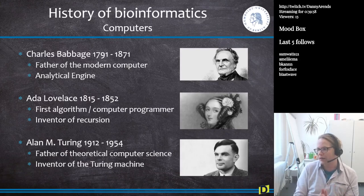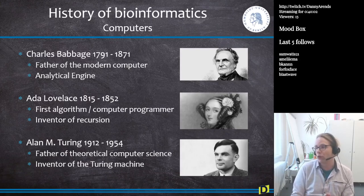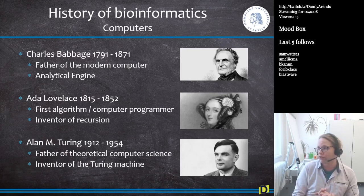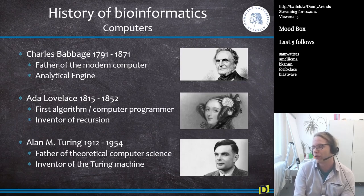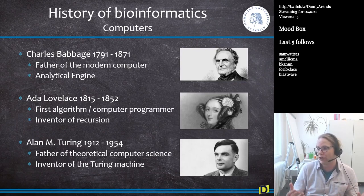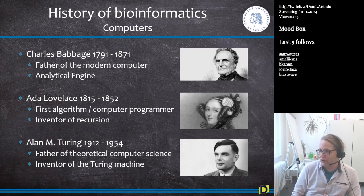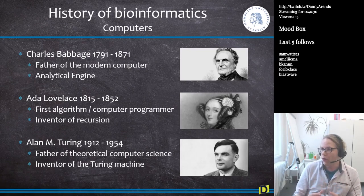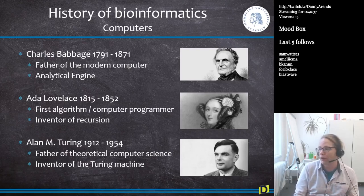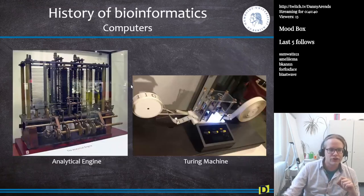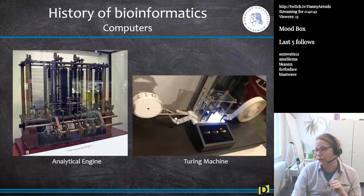He did this by inventing the Turing machine. The Turing machine is a machine you can actually build, though it requires an infinite band of input, which doesn't exist in real life. Based on this schematic, we know what is a solvable problem and what is an unsolvable problem. The Analytical Engine was actually built in the 1990s and a version exists in a UK museum.